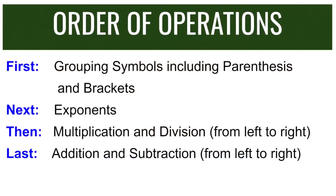In simplifying numerical expressions, we need to follow the order of operations. First, simplify any grouping symbols including parentheses and brackets. Next, we need to simplify the exponents. Then we need to multiply and divide from left to right. And lastly, we need to do addition and subtraction from left to right as well.